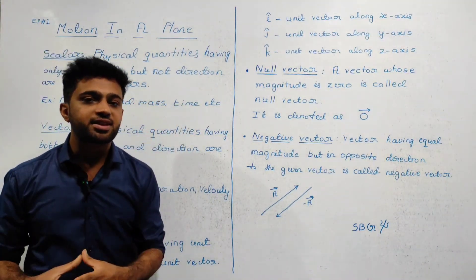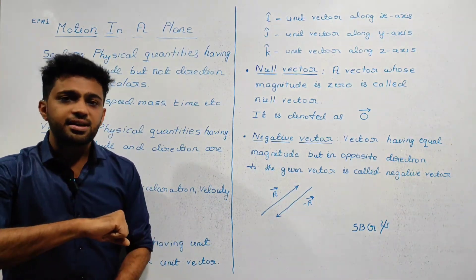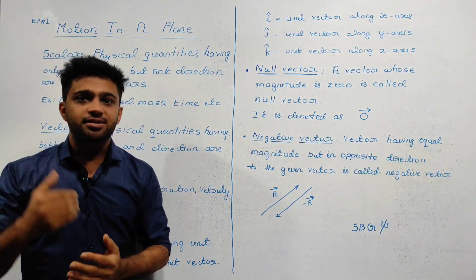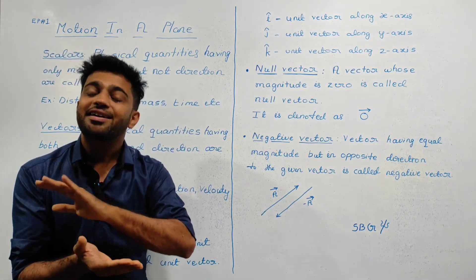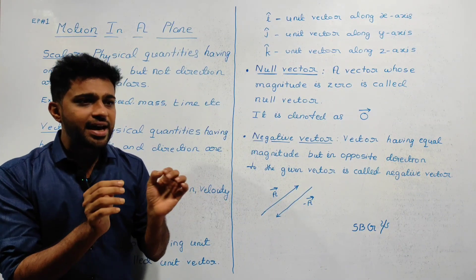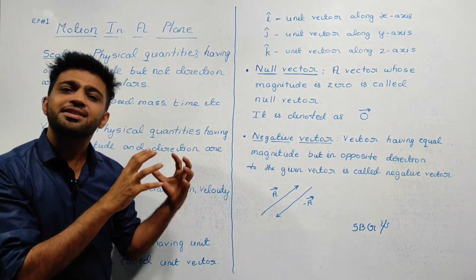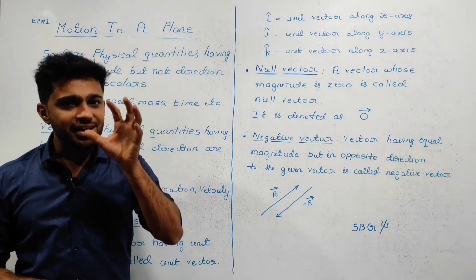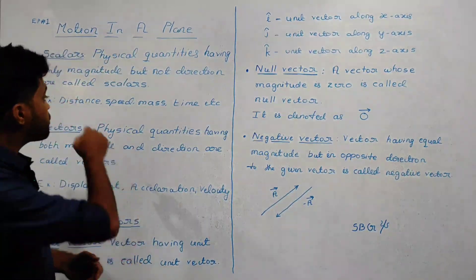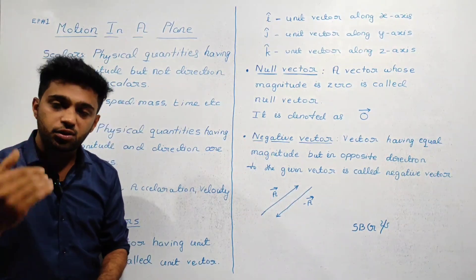So time is also a scalar quantity. If you can see, magnitude exists but direction does not, so it is a scalar quantity. I've added the examples on my board. I have other examples to explain scalar quantities — you can share more examples in the comment box. Now let's look at vectors.